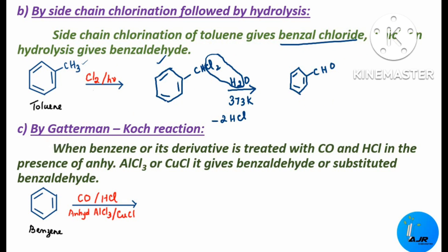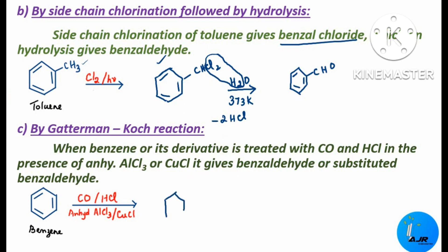The next important reaction is the Gatterman-Koch reaction. When benzene or its derivative is treated with carbon monoxide and HCl in the presence of anhydrous aluminum chloride or cuprous chloride, it gives benzaldehyde or substituted benzaldehyde. So when benzene is treated with CO and HCl in the presence of either anhydrous AlCl3 or cuprous chloride, we get benzaldehyde, CHO. This is an important reaction.